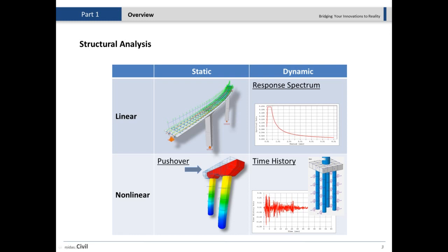On the other hand, we have time history analysis, which is considered a nonlinear type of analysis because we consider the nonlinearity of the material. For example, when you have your pier, pile, or girders, we don't just consider elastic behavior — we also see the nonlinearity of the structure, examining more of the bridge's capacity when it goes into the plastic zone. Additionally, static nonlinear analysis, or pushover analysis, is used to find out the capacity of the structure by pushing it until it fails, with failure defined by plastic hinge formation.